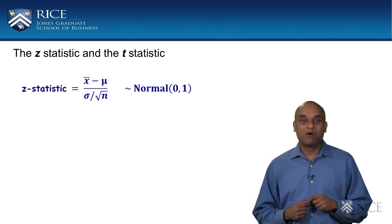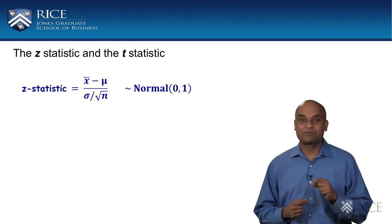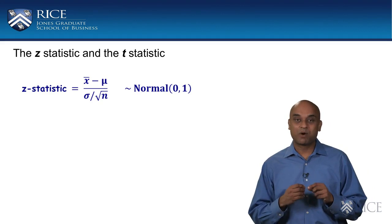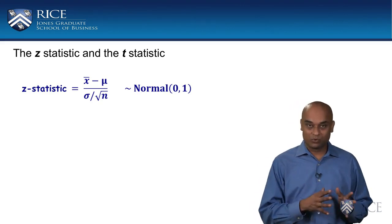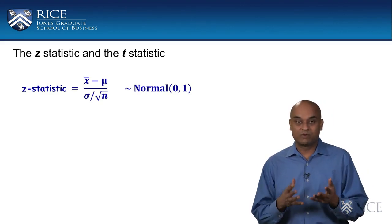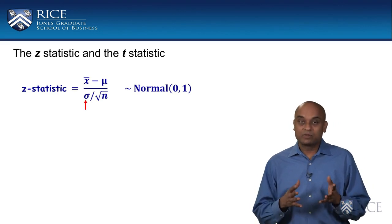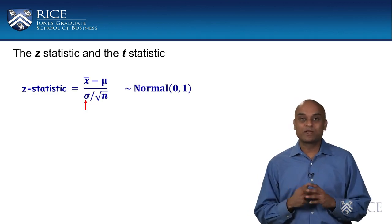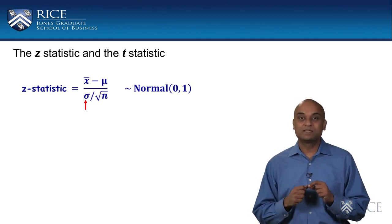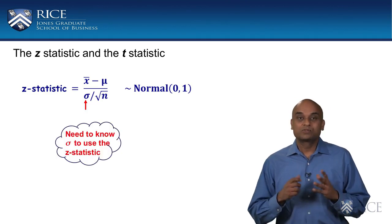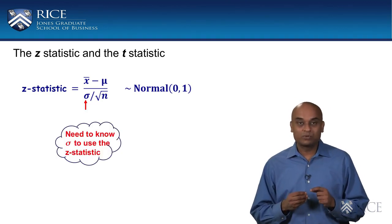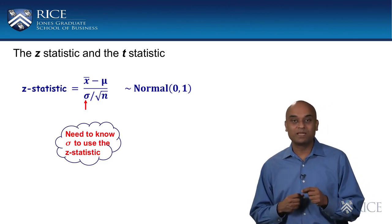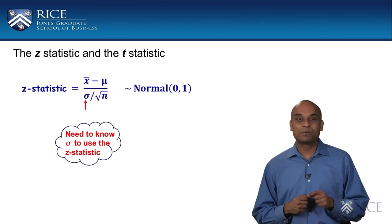This Z-statistic will form the basis of our calculation for a confidence interval for the population mean. Our quantity of interest is the population mean, which is unknown, and we wish to build a confidence interval for it. However, notice that in using the Z-statistic, we also have the population standard deviation sigma in the denominator. So, if we are going to use the Z-statistic to build a confidence interval for the unknown population mean, we need to know the population standard deviation.